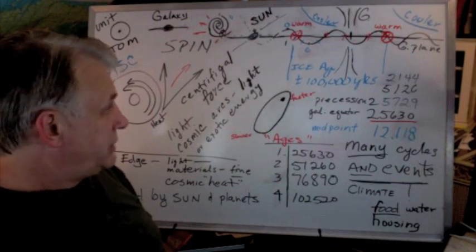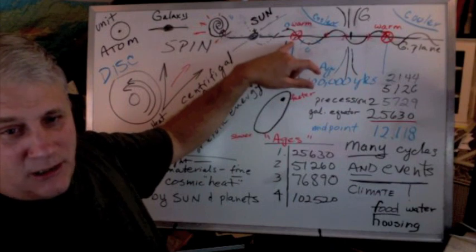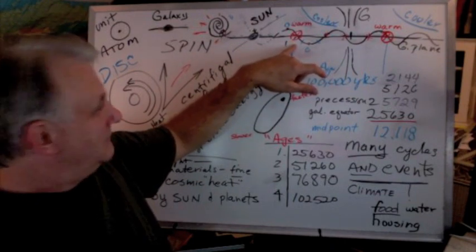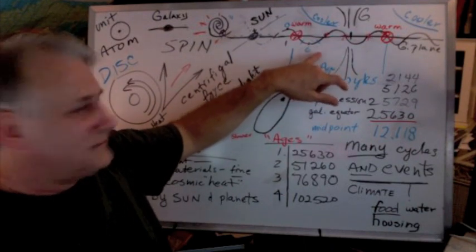Now, the question is, is the enlightened age when it's crossing the ecliptic, when everybody's heated up, or is the enlightened age after everybody's cooled down a bit?